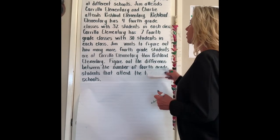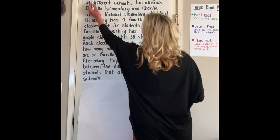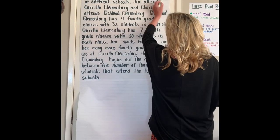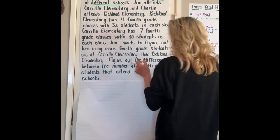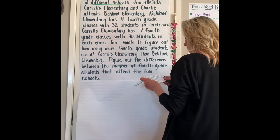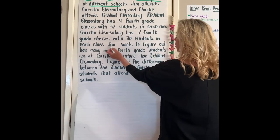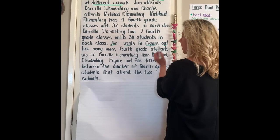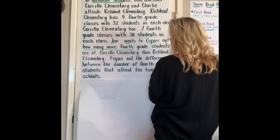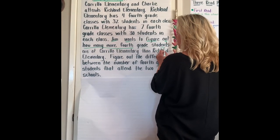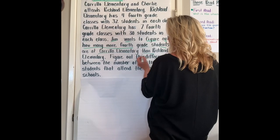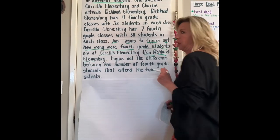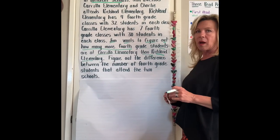Okay, so let's talk about what we know. We know that Jim and Charlie are fourth graders at different schools. We also know that Jim wants to figure out how many more fourth grade students are at Carrillo than Richland Elementary. So that's what's going on.